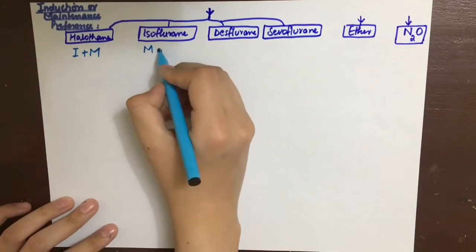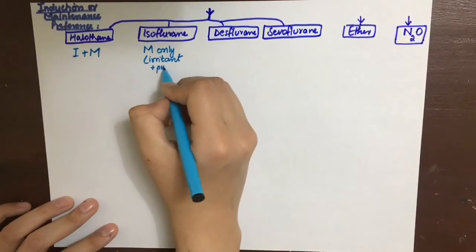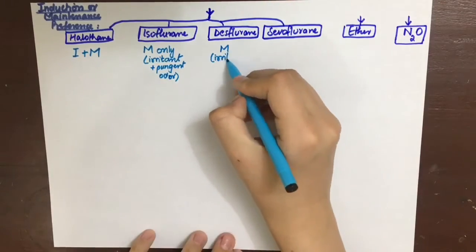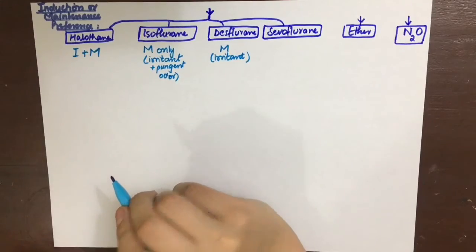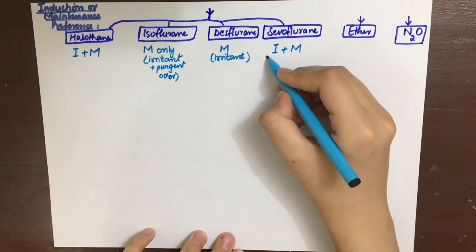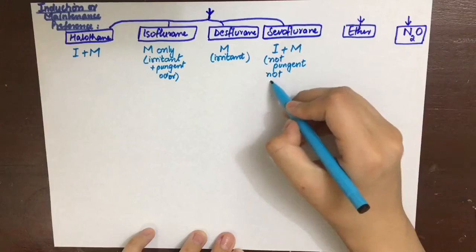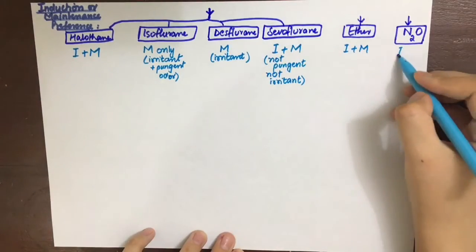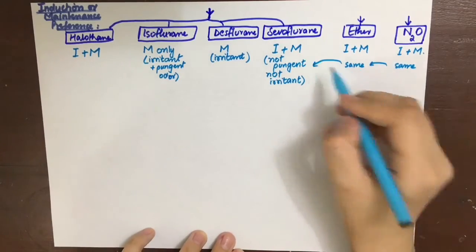Let's see which ones are used for induction and which ones are used for the maintenance of anesthesia. Halothane is used for both induction and maintenance. Isoflurane is used for the maintenance only because it is an irritant and irritates the air passages. It also has a pungent odor. Desflurane is only used for maintenance. It is also an irritant. Sevoflurane can be used both for the induction and maintenance because it is not pungent or irritant. Ether can also be used for induction and maintenance for the same reasons and so is nitrous oxide.